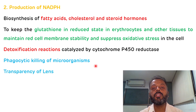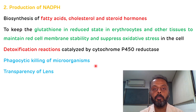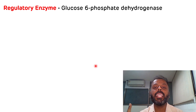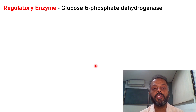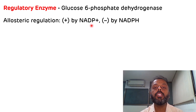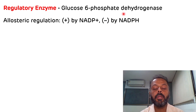That is the significance of the HMP shunt pathway. Now we will see the regulation of the HMP shunt pathway. It is regulated by one key enzyme known as glucose-6-phosphate dehydrogenase (G6PD), which is the rate-limiting enzyme. It is allosterically stimulated by NADP+ and allosterically inhibited by NADPH. This G6PD enzyme is induced by insulin.